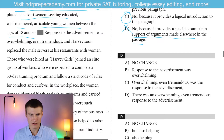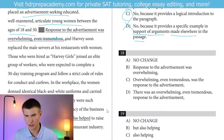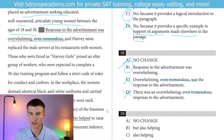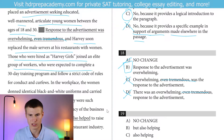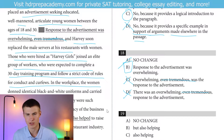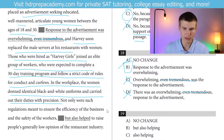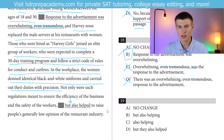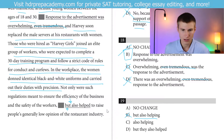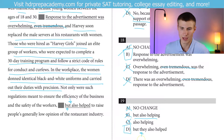For question 18: 'response to the advertisement was overwhelming, even tremendous' — those two mean the same thing, so I'm going to want to get rid of one. A, C, and D all say both 'overwhelming' and 'tremendous,' which is redundant. I only want to say one — answer there will be B. Harvey soon replaced the male servers with women. Those hired as Harvey Girls joined an elite group expected to complete a 30-day training program and follow a strict code of conduct and curfews. Not only were such regulations meant to ensure efficiency of the business — we need a subject after the comma and 'but.' We can't say 'but also helping' or 'but also helped' without a subject. Answer choices A, B, and C don't have subjects. D gives us that subject with the pronoun 'they.' Our answer has to be D.